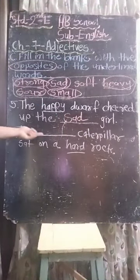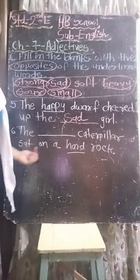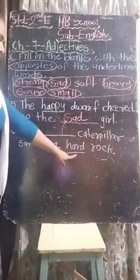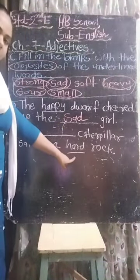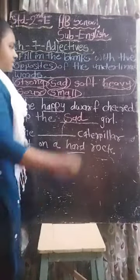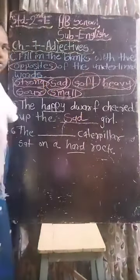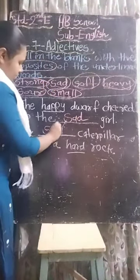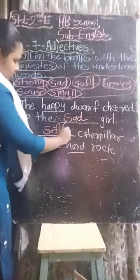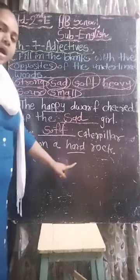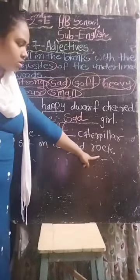Sixth one: the dash caterpillar sat on a hard rock. The underlined word is hard. Hard's opposite is soft. Write down here: soft. The soft caterpillar sat on a hard rock.